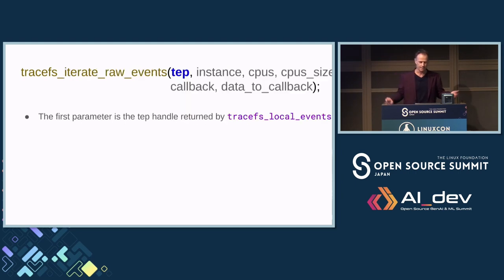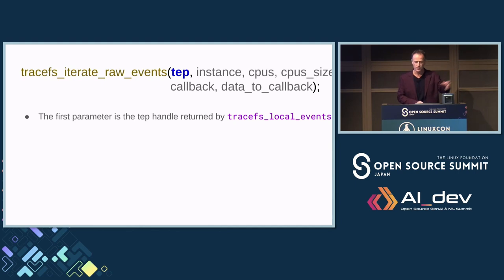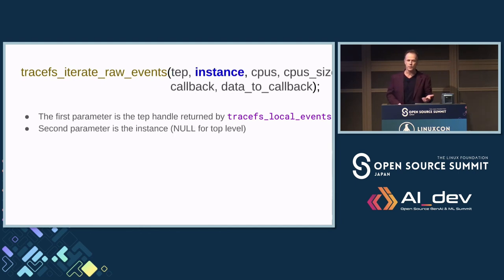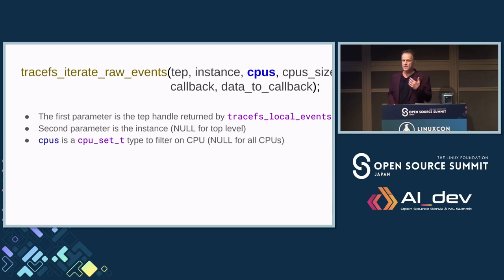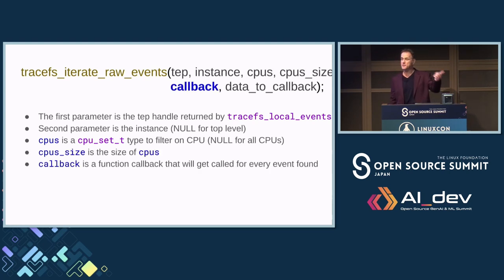The third parameter is the event name. Next, I want to iterate all the events. I pass in tracefs_iterate_raw_events, which takes the TEP instance handle returned from tracefs_local_events, the instance handler (null for top level), an optional CPU mask if you want to trace a single CPU or CPU set, a callback handler that gets called on every single event, and data to pass to that callback.